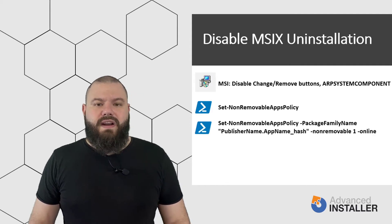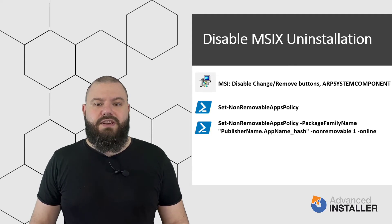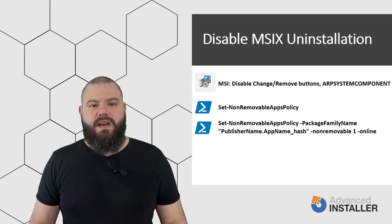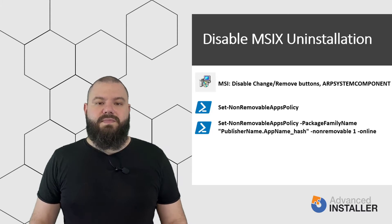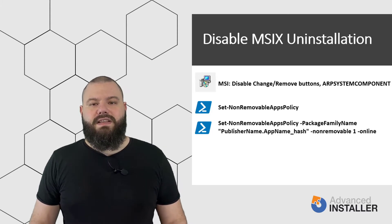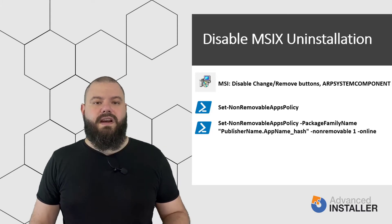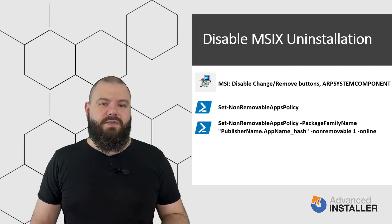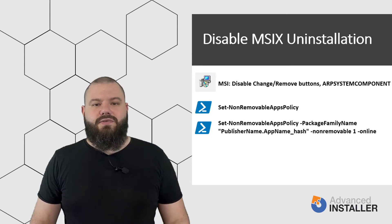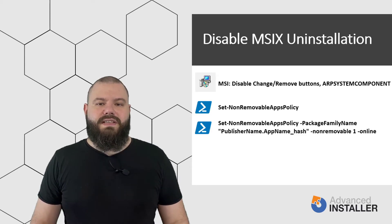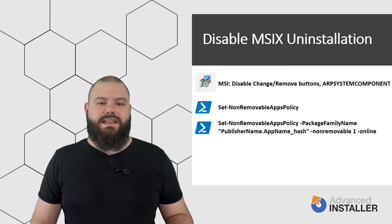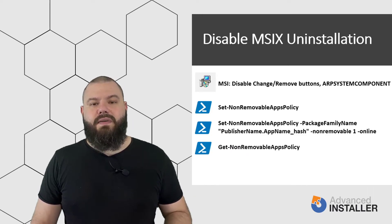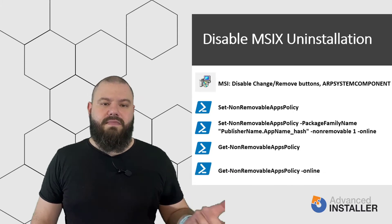The NonRemovable parameter can be 0 or 1, meaning that if you want to disable the uninstallation of a package, the parameter should be 1. To remove this policy, the same PowerShell commandlet is used, only this time the NonRemovable parameter must be 0. To check what non-removable policies are on a particular machine, you can use the Get-NonRemovableAppsPolicy PowerShell commandlet.